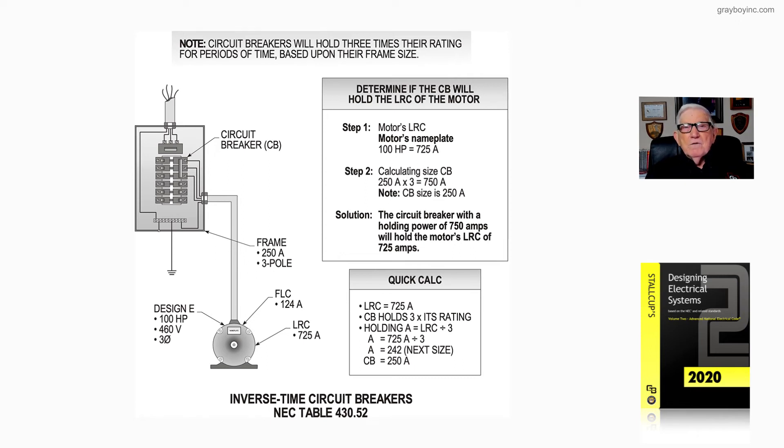NEC 430.52(C)(1) exception covers the round up size that you would find in your code book when you review the round up, round down size, or maximum size that we talked about. So this is a quick way to do it as you see in the quick calc.